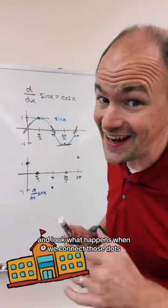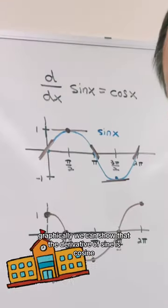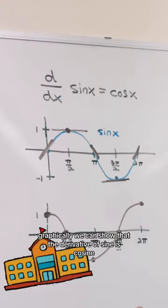And look what happens when we connect those dots. This graph is our familiar cosine graph. Graphically we can show that the derivative of sine is cosine.